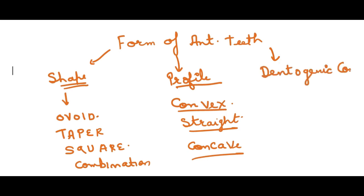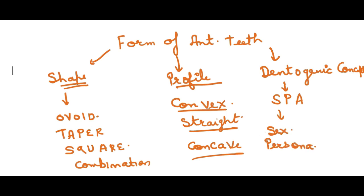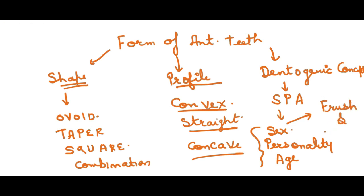The dentogenic concept includes three factors: sex, personality, and age — also known as the SPA factor. This concept was described by Frush and Fisher, which is important for entrance exams. According to them, three factors matter in teeth selection: sex, personality, and age.